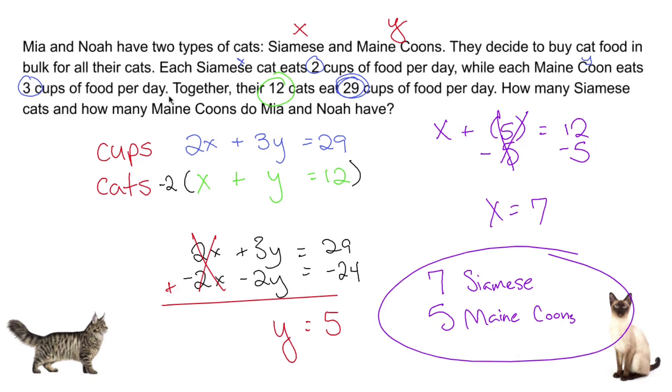So again, the purpose of solving systems of equations word problems is you need to come up with two equations based off the two groups of information that you have. Usually one of the equations is going to be total, and the other equation is going to be some type of value or amount. And then you go from there.